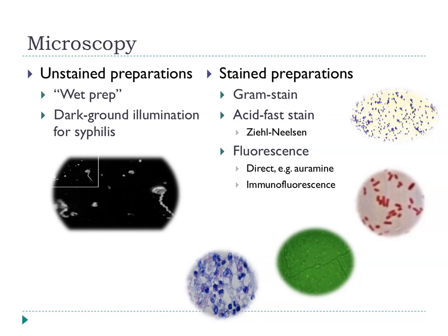Most of the time we do rely on stains, and we have a number of different approaches in our armamentarium. The Gram stain is the most commonly used. Tuberculosis is unusual in that the organism doesn't stain with the Gram stain — we have to use acid-fast staining, where we apply the stain and then try to leach it back out with acid and alcohol. Almost all organisms lose the stain this way, apart from the organisms that cause TB. Fluorescence approaches can also be used as an alternative.